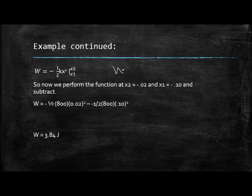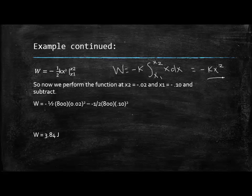Alright, so when I integrate this expression here, it's going to become x squared over 2. So I integrated this, I added 1 to the power, and I divided it by the new power. I get negative kx² over 2, which is what you see here. So I'm going to evaluate this expression from x1 to x2. So I'm going to actually perform the function here. I'm going to plug in my values for x2 and x1, and you subtract the two of them. So that makes this expression become negative ½(800). This is our x2 position, which is .02 squared, minus negative ½(800) times .10 squared. And then when you do that, you get the work done on the block to be 3.84 joules.